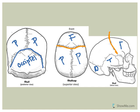The squamous suture is found around where the temporal bone is. The sagittal suture runs along the top — think of a sagittal section cut along this way. So those are the four sutures: coronal, lambdoid, squamous, and sagittal.